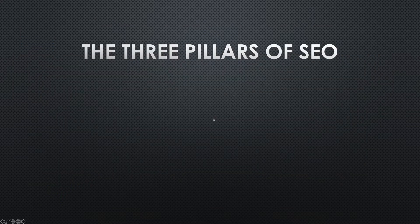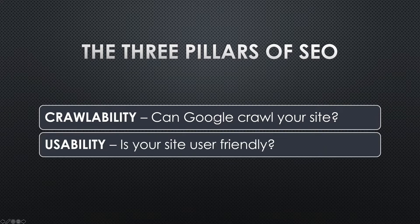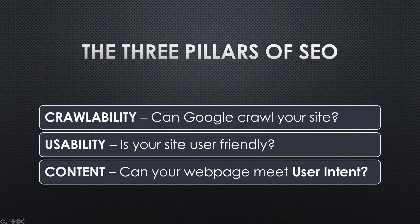The three pillars of SEO — these are my three pillars, the most important things. Crawlability: can Google crawl your site? Usability: is your site user friendly? Content: can your web page meet user intent?